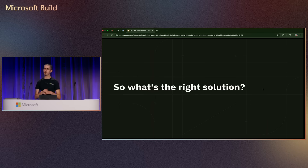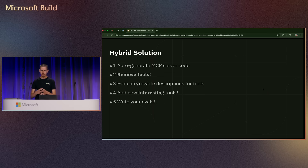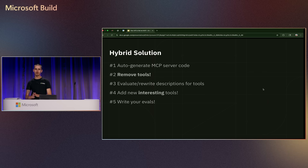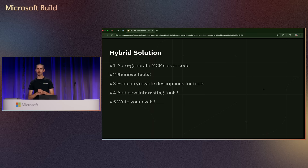So if you're building an MCP server today: should you write it from scratch or auto-generate it? I'd say definitely don't auto-generate it, but a hybrid solution — start by auto-generating and then cut it down — can make sense. Auto-generate from your OpenAPI schema, then remove as many tools as possible. The worst thing you can give an LLM is too much choice. Evaluate the descriptions for all your tools, think about interesting purpose-built tools you might want to expose that you wouldn't put in your API, and write evals. If you're building an MCP server, you should have tests to ensure LLMs can use it correctly.